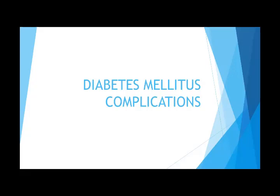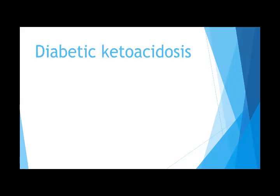The next important aspect is the complications of diabetes. There are two types: acute and chronic. The acute complications are diabetic ketoacidosis and hyperosmolar non-ketotic diabetic coma. Diabetic ketoacidosis is very important because if treated in time, lives can be saved. If not treated promptly, the mortality rate is very high.